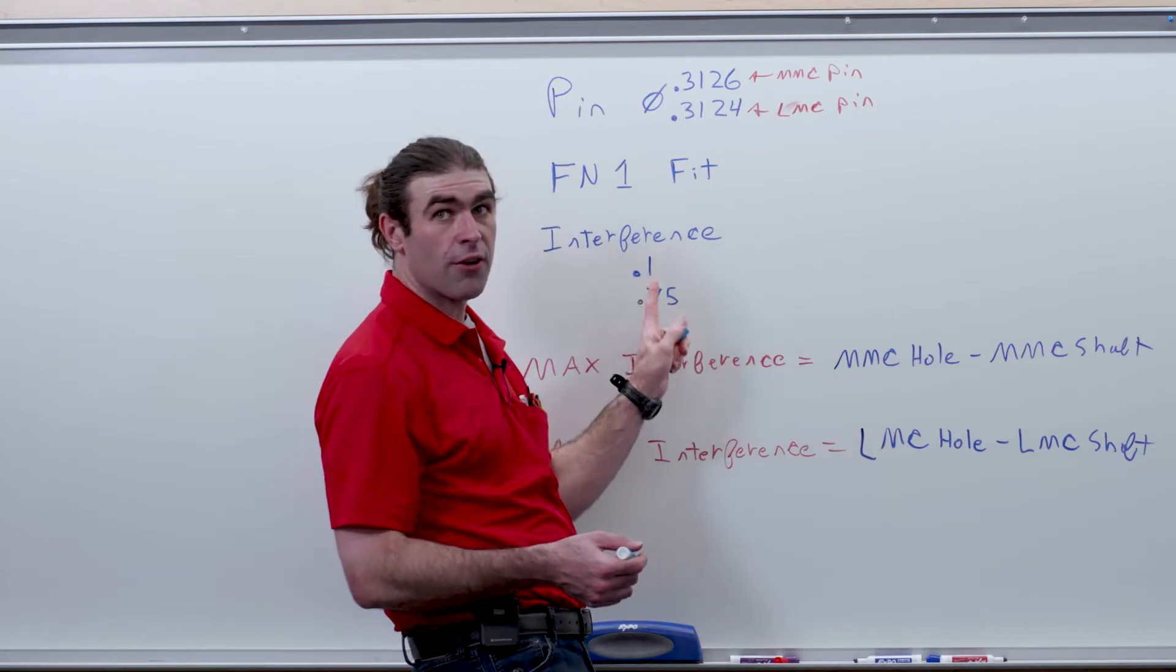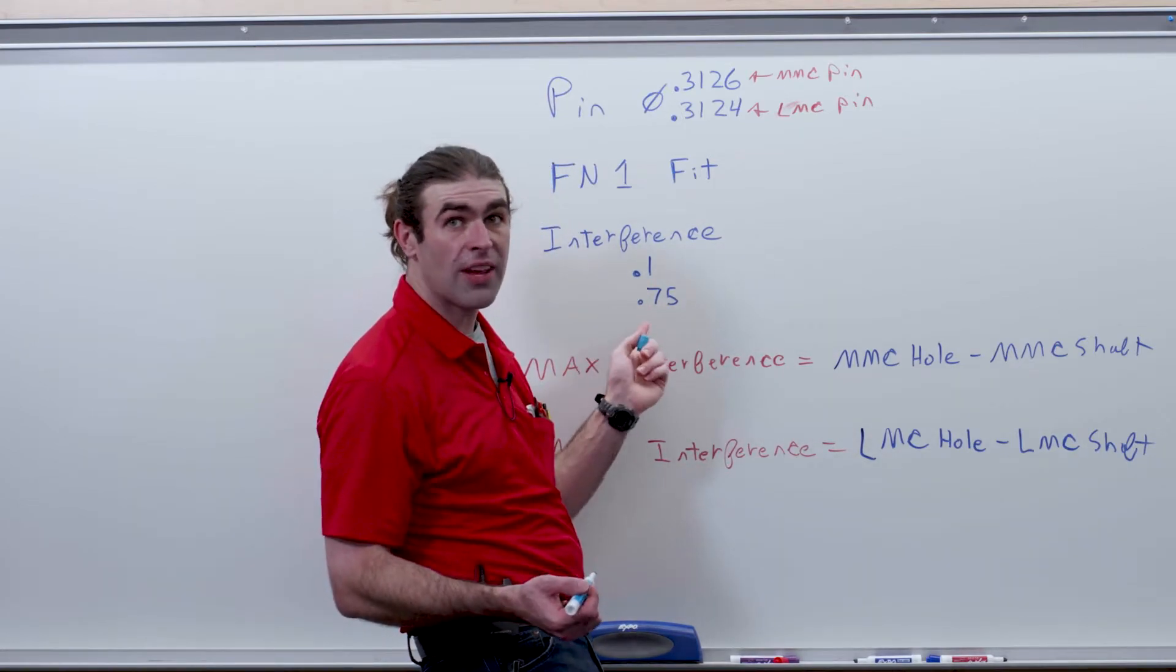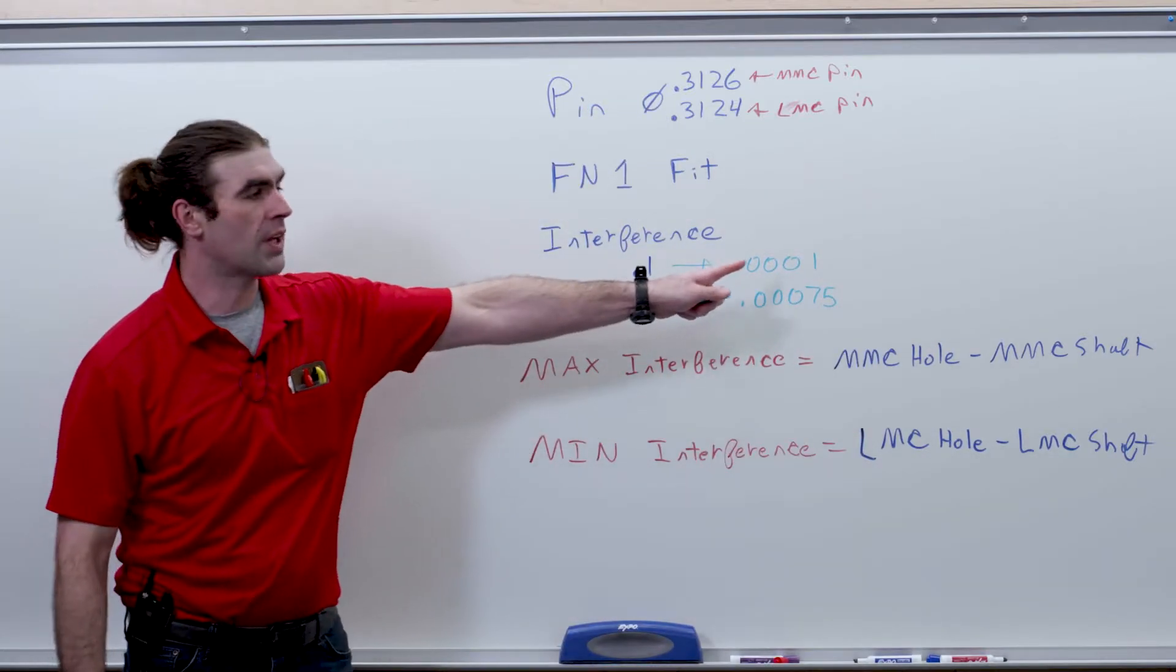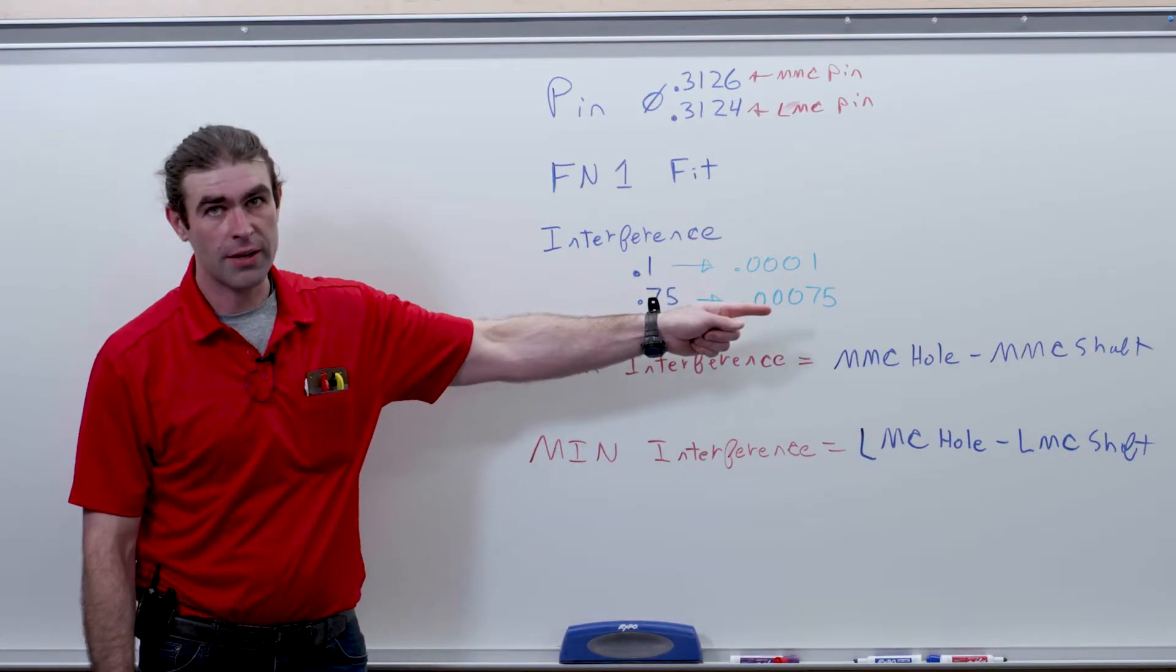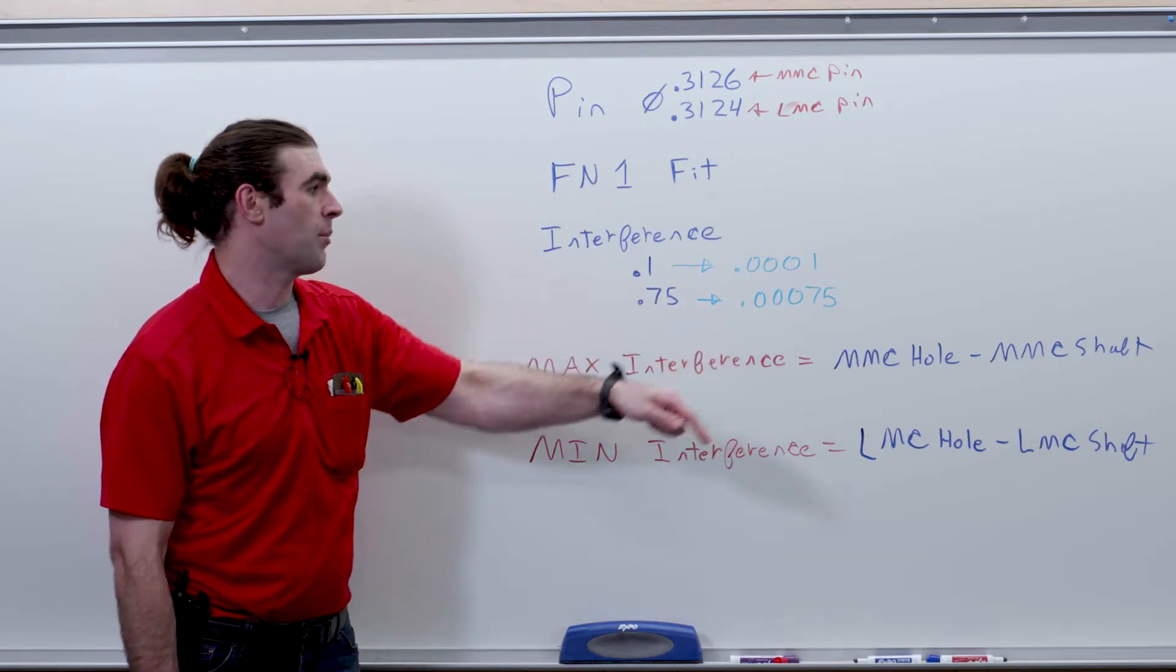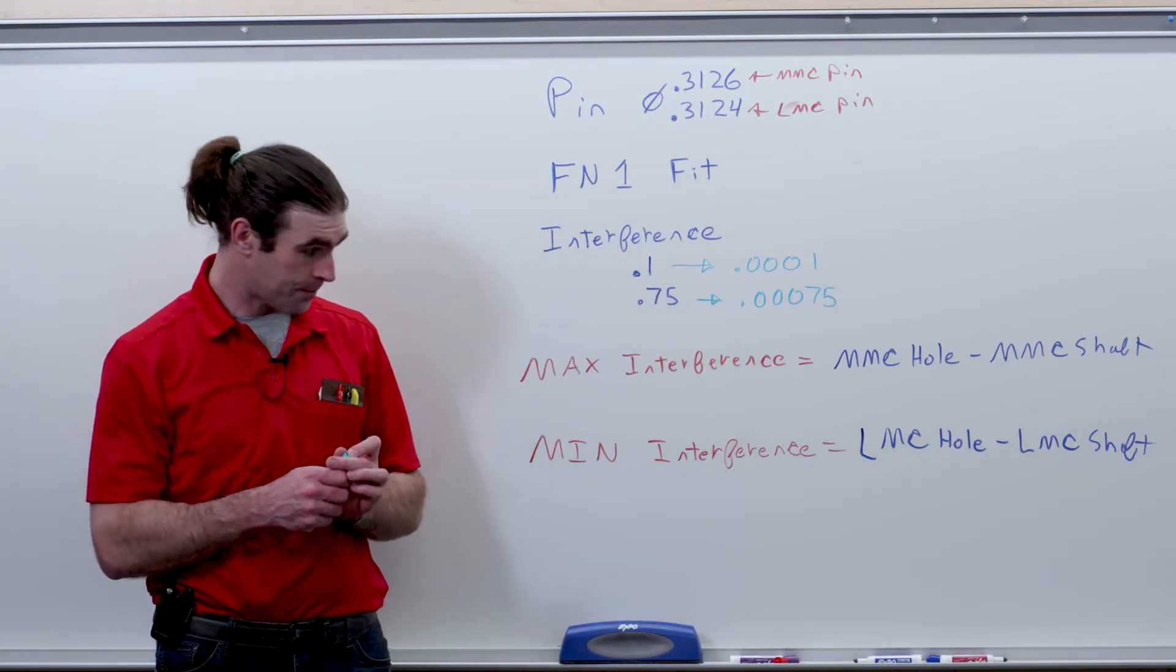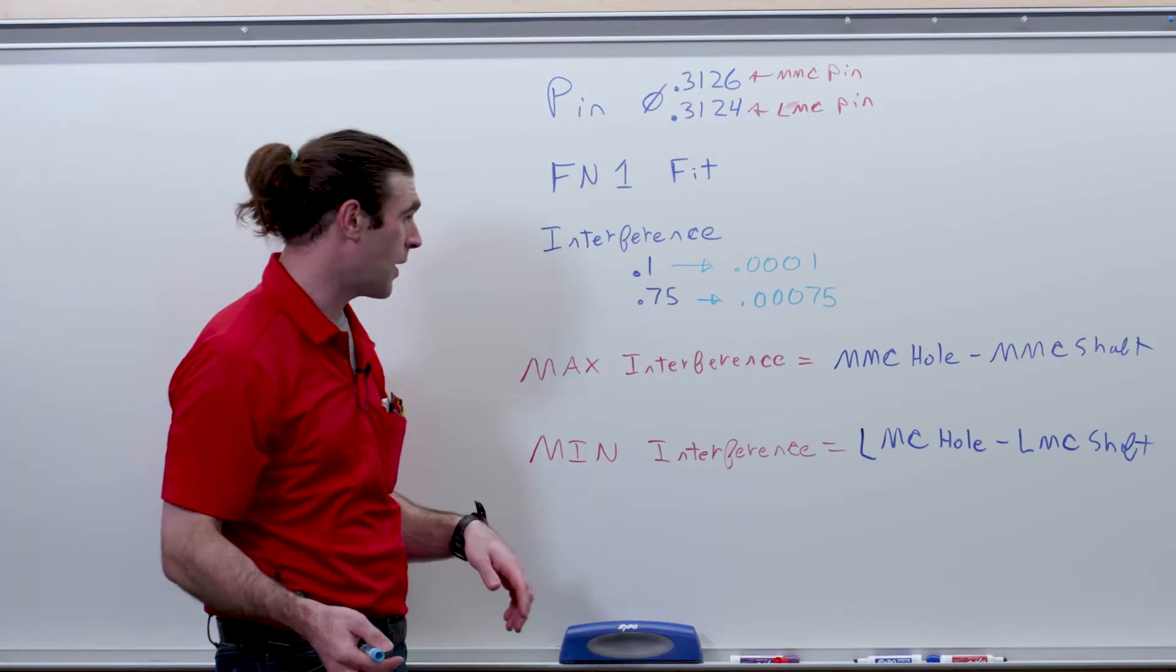The first thing we'll do is convert these wacky numbers from Machinery's Handbook into something we can use. So 0.1 becomes 0.0001, three O's and a 1, then same thing here. You could do the same thing by just moving the decimal places. Now, we'll just set up the equations.